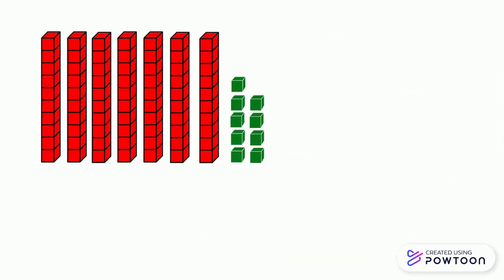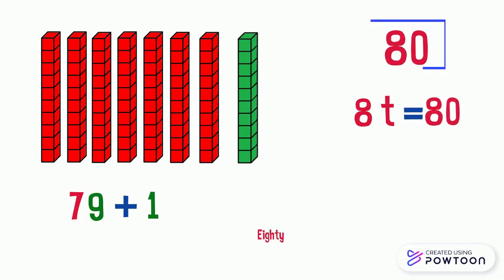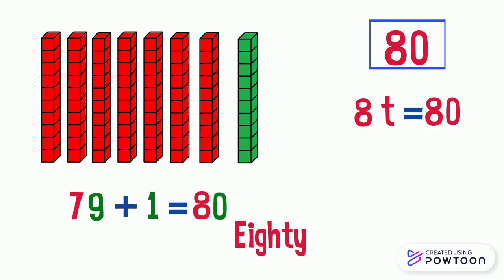Here we have seven tens and nine ones. It represents the number 79. Let's add one one so we will get ten ones. Then replace ten ones by one ten. We have got eight tens, which is 80. 79 plus 1 equals 80, and 70 plus 10 equals 80.